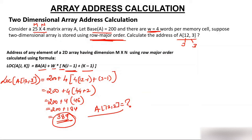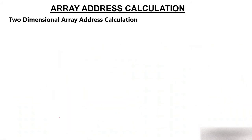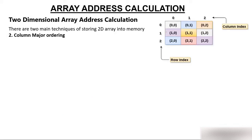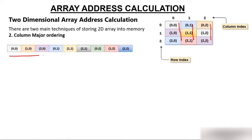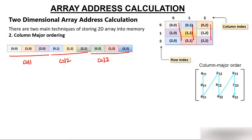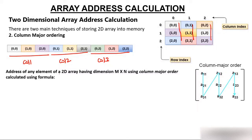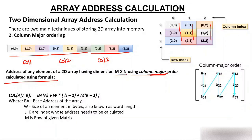That was row major order. Now let's discuss column major order. In column major order, you have a matrix and you store data column by column — first column zero elements, then column one, then column two, and so on. When you store data in a column-wise fashion, this is called column major order. The address of any element of a 2D array with dimension M×N using column major order is calculated using a similar formula for a[j][k]: Base(a) + W × ((k−1)×M + (j−1)).